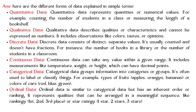Continuous data can take any value within a given range and includes measurements like temperature, weight, or height, which can have decimal points. Categorical data groups information into categories, such as types of fruits — apples, oranges, bananas — or colors of cars — red, blue, green. Ordinal data is similar to categorical data but has an inherent order or ranking, representing qualities arranged in a meaningful sequence like first, second, third place or star ratings of one, two, or three stars.